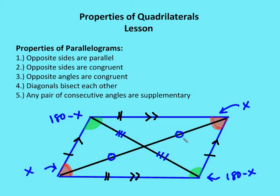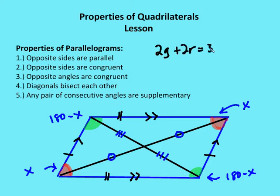Finally, any pair of consecutive angles are going to be supplementary. In a quadrilateral I have two triangles, and those triangles have angle sums of 180 degrees each, so the quadrilateral has a sum of 360 degrees for all its angles. Two green angles plus two red angles equal 360 degrees, and dividing by two gives one green plus one red equal to 180 degrees — so consecutive angles are supplementary.